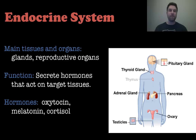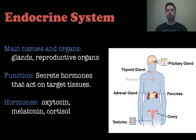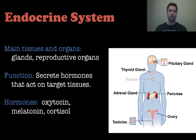Next we have the endocrine system, which is all the glands and reproductive organs. Its specific purpose is secreting hormones that act on target tissues. Some hormones it secretes include oxytocin, which is a protein-like hormone; melatonin, which helps regulate the sleep cycle; and cortisol, which is the stress hormone and looks much like a lipid. Those are just a few examples — there are a lot more hormones to look at.